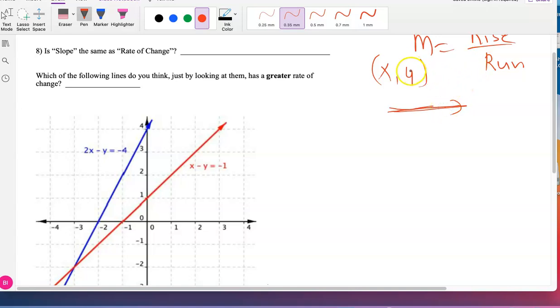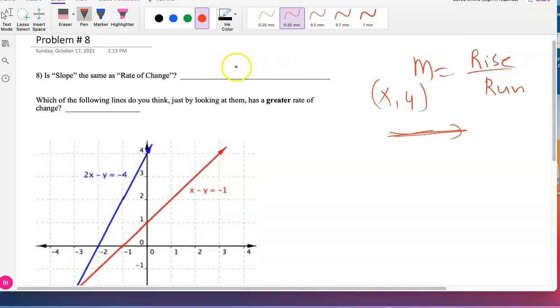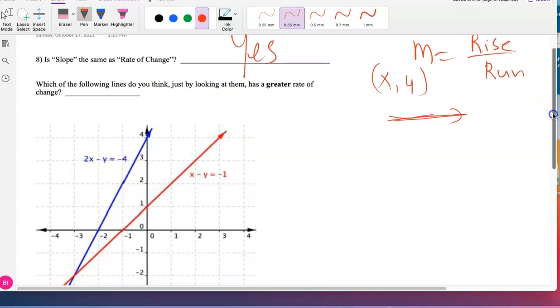That's what is the rise over run, which is the slope, and that slope is the same as the rate of change. So here I can go ahead and write down the slope is same as the rate of change.